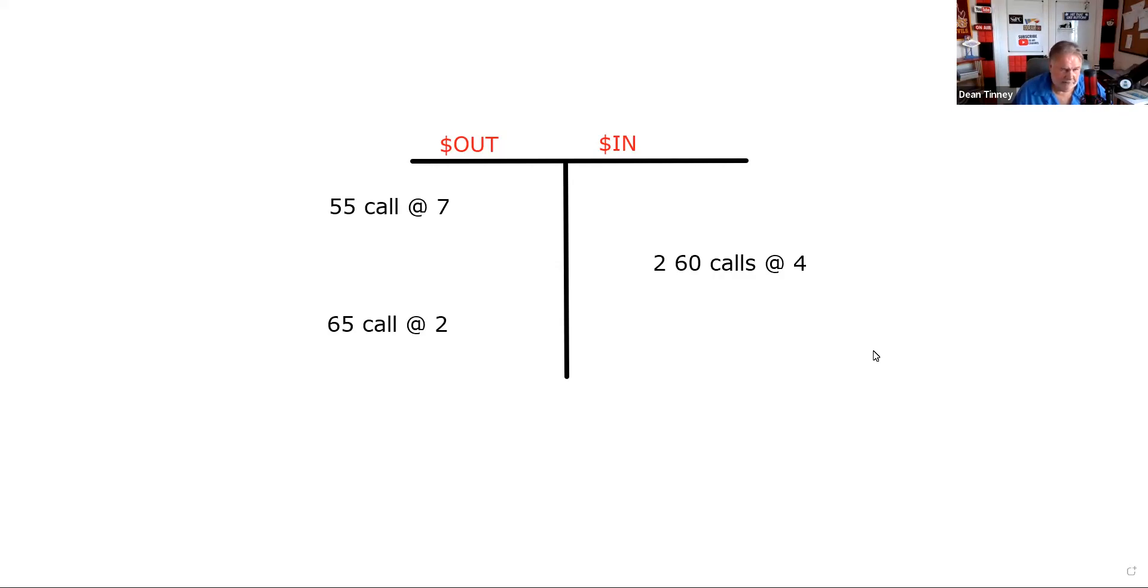So I'm going to go over this. I'm not even sure I'm going to put it in the Series 7 playlist. I'll put it in the Series 4 playlist for sure, and maybe I'll put it in the Series 9 playlist. So here's the setup: the customer buys a 55 call at 7, he writes 2 60 calls at 4, and then he buys a 65 call at 2.